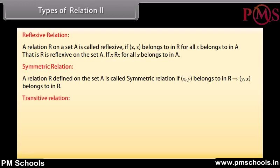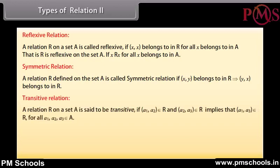Transitive relation: A relation R on a set A is said to be transitive if (a1, a2) belongs to R and (a2, a3) belongs to R implies that (a1, a3) belongs to R, for all a1, a2, a3 belonging to A.